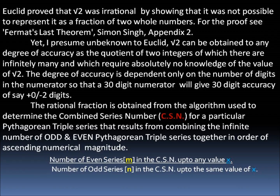The rational fraction is obtained from the algorithm used to determine the combined series number, CSN, for a particular Pythagorean triple series that results from combining the infinite number of odd and even Pythagorean triple series.